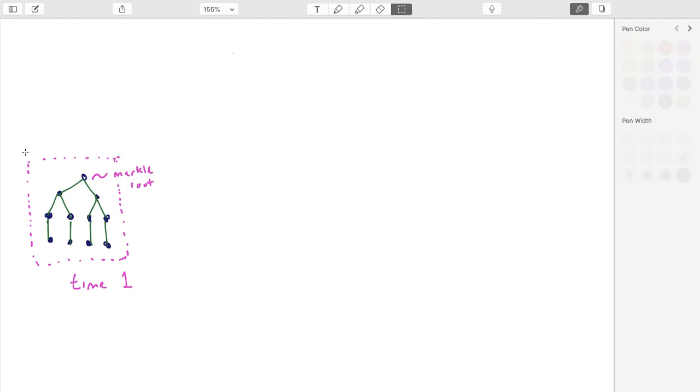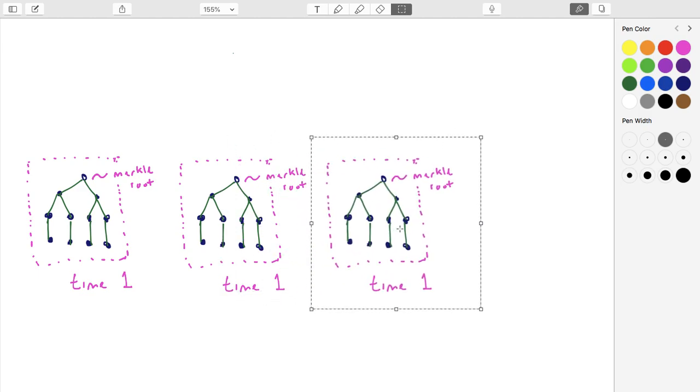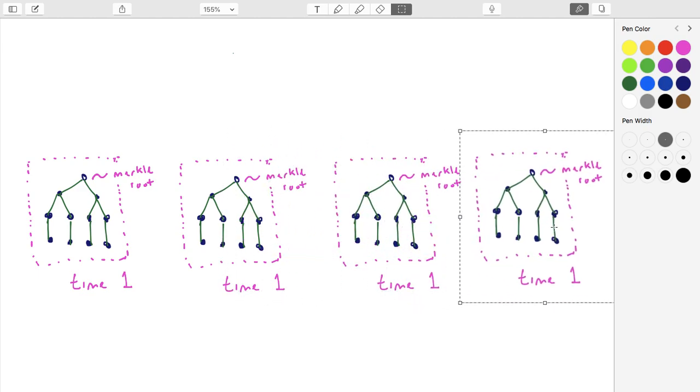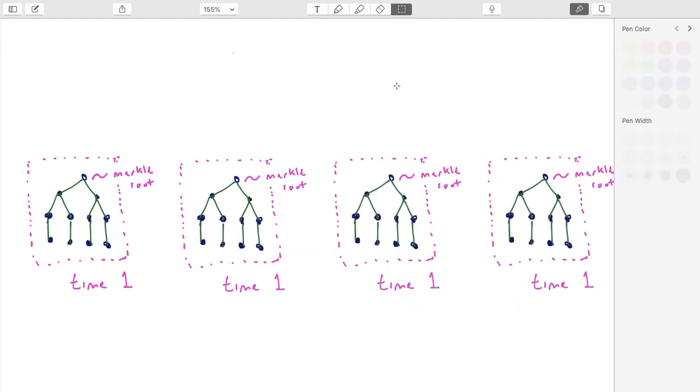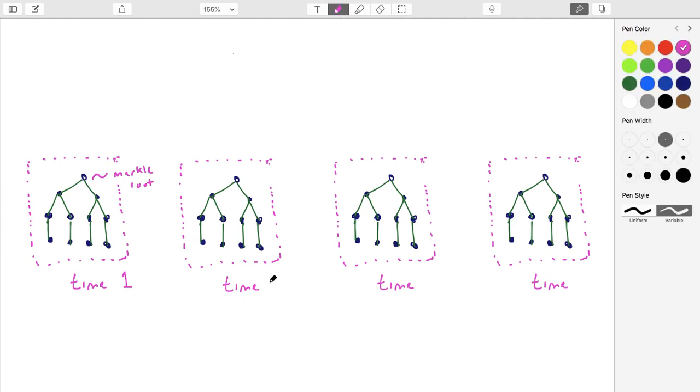And then later, in the next time period, we're going to have another set of new messages. And then another set, maybe another set. So we'll call this time one, time two, time three.